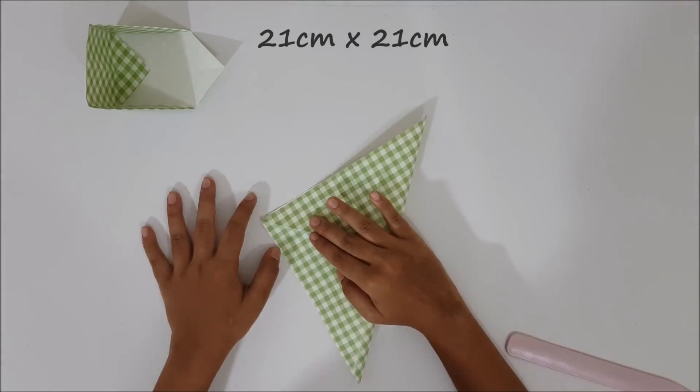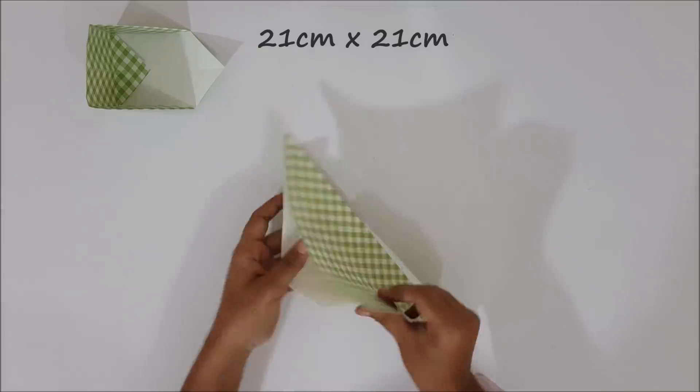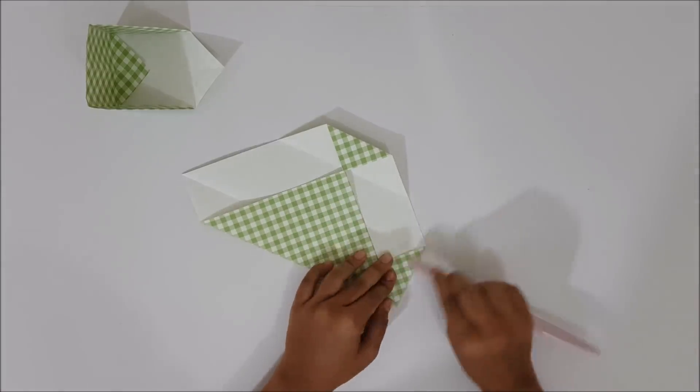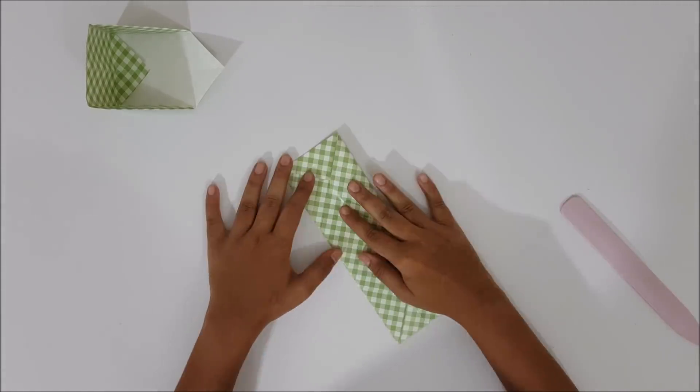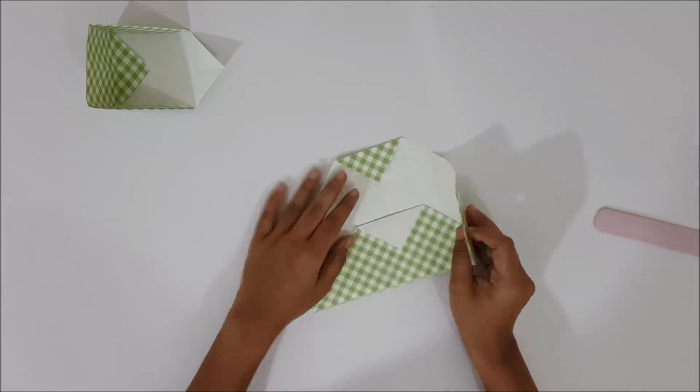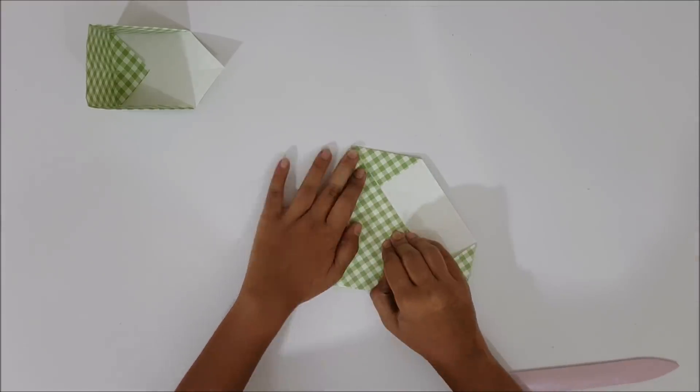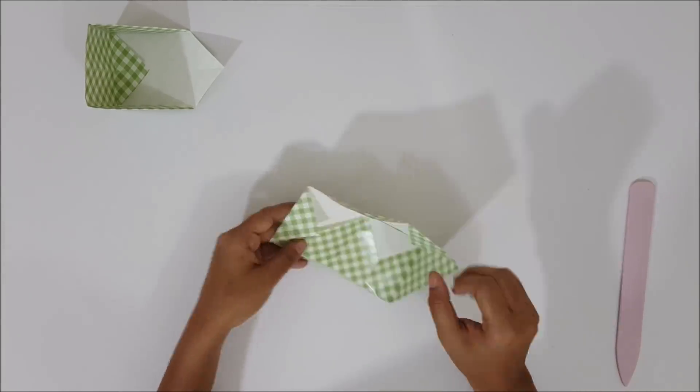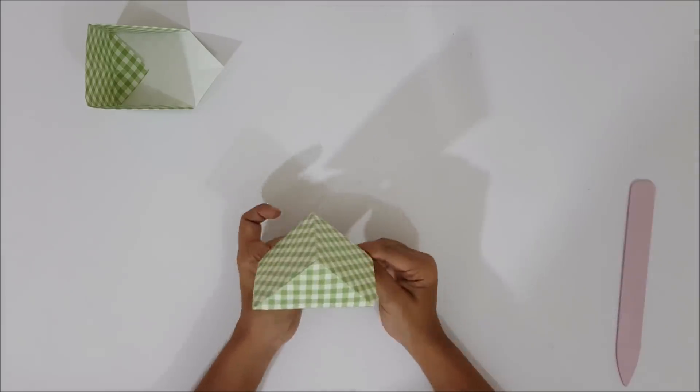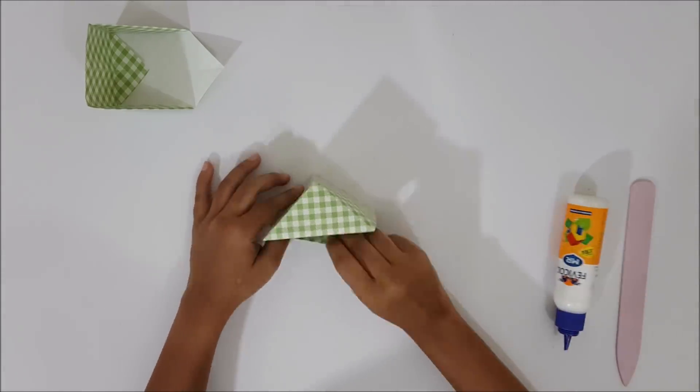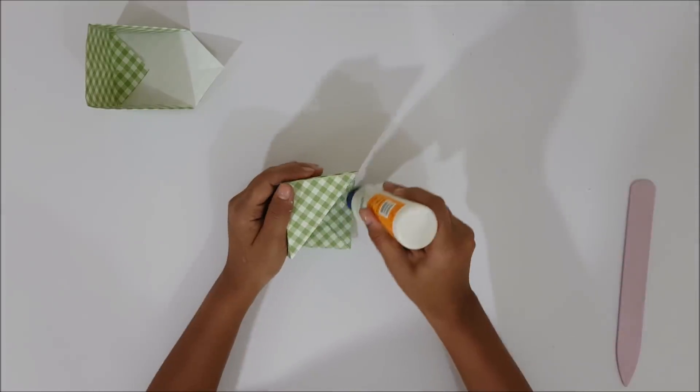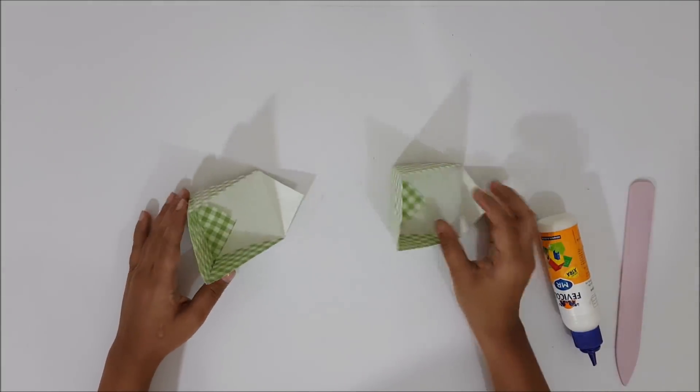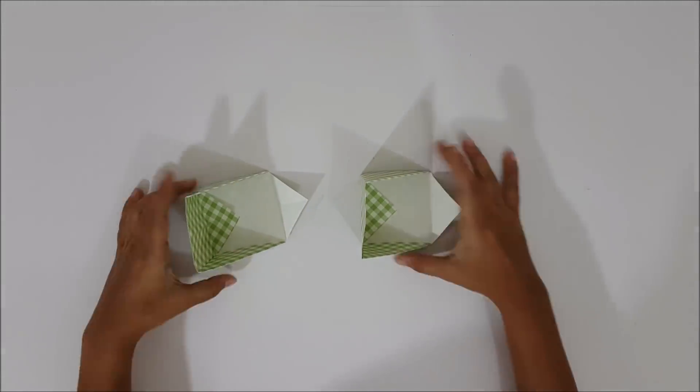Now, again using 21cm by 21cm paper, create the other diagonal half of the cube. Now stick both the sides of the cube together. Now stick both the diagonal halves of the cube to each other as shown.